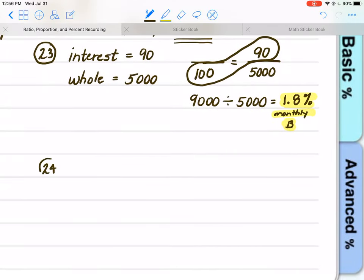24. What is the total interest paid for one year? Well, if he's paying $90 a month, how many months are in a year? There are 12. So 90 times 12 is $1,080 in interest per year. So for this one, I would go with option C.